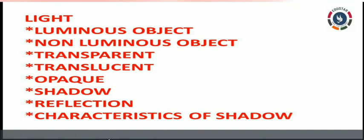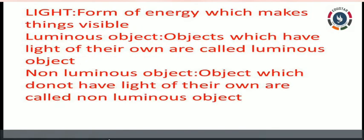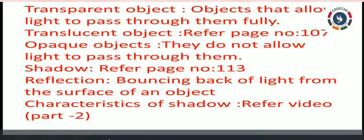In this lesson, you need to define light, luminous objects, non-luminous objects, transparent, translucent, and opaque with examples, and also shadow, reflection, and characteristics of a shadow in your classwork note. These are all the small subheadings you should write. The answers are given in the PPT — just see and copy everything clearly in your classwork note.